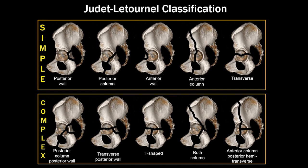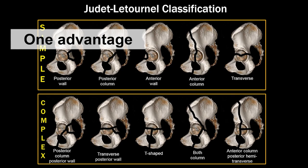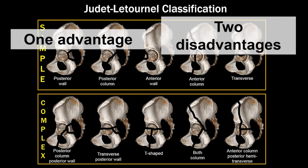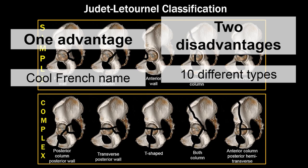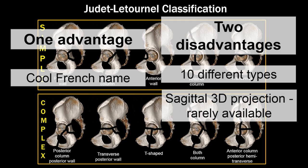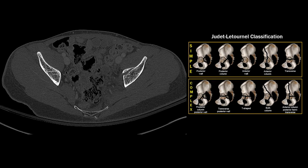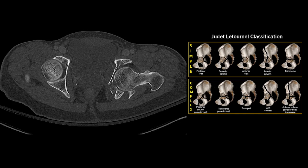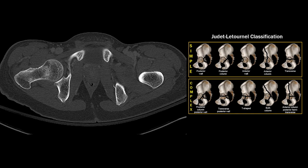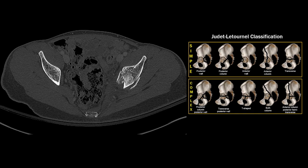Here is the Judet-Letournel classification system. At first glance, it has one advantage and two disadvantages. The advantage is that it has a really cool French name — Judet-Letournel. The disadvantages are that there are ten different fracture types, and they are shown in a sagittal 3D projection with the femoral head removed that will not be available to you at initial interpretation. It can feel like it gets complicated very quickly.